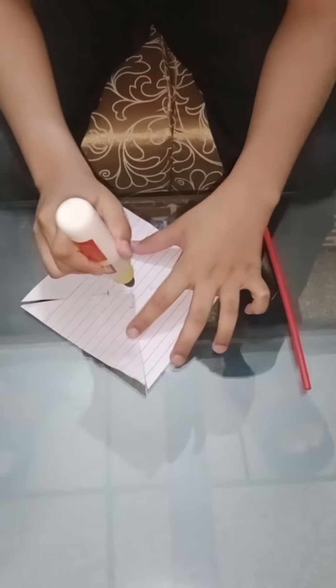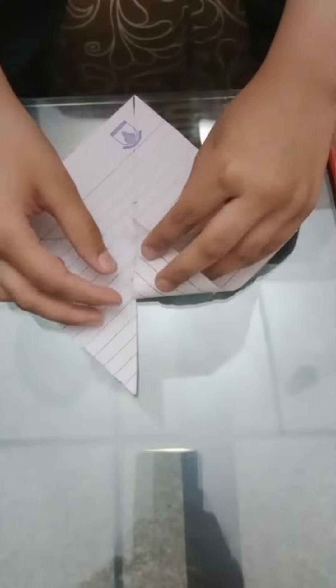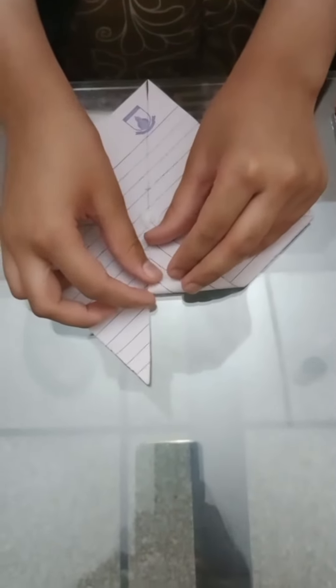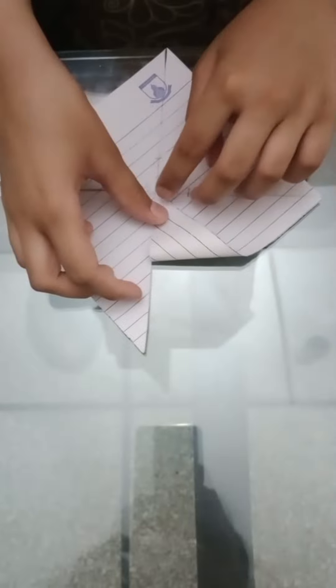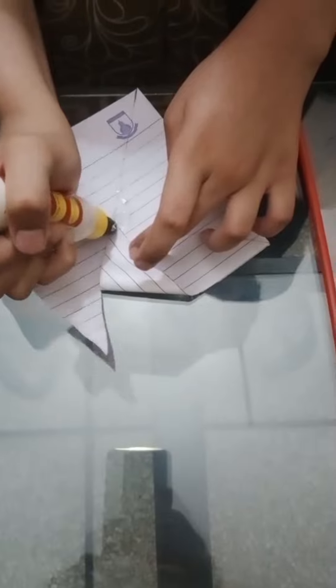We will put some glue in the center. When we have put glue, we will attach one on each side like this. Now we will put some more glue on this one, then we will rotate it.